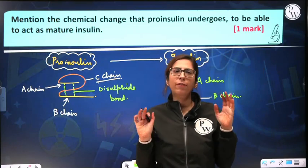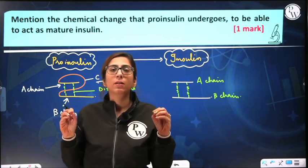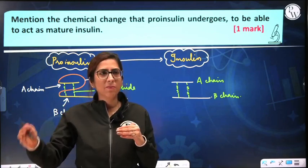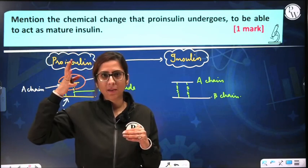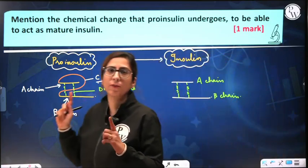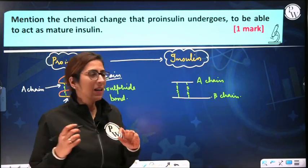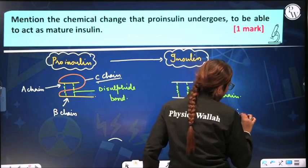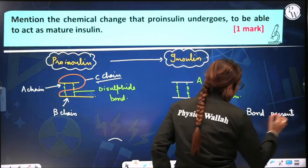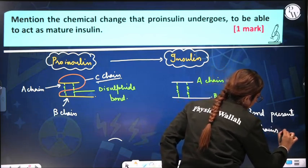Things should enter our minds because our exams are near and we have to retain things for the board examination. Another important question that can be asked from this topic is: what is the bond present in the two chains of insulin? That is question number two — please give the correct answer in the comment box.